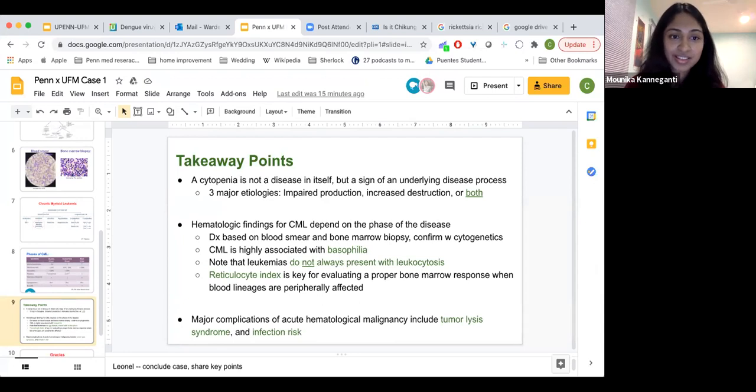In addition, hemolytic findings for CML depend on the phase of the disease. We definitely learn a lot from the blood smear and the bone marrow biopsy and can confirm later with cytogenetics. CML is associated with basophilia and the reticulocyte is key for evaluating a proper bone marrow response. Last thing just to mention, like in this case, those who are receiving chemotherapy are high infection risk. Blood cancers in particular are also higher risk for tumor lysis syndrome. In this case, the phosphate was normal. So don't think that this patient experienced tumor lysis syndrome, but something to also look out for. With that, we have maybe one or two minutes for questions. If anyone wants to unmute themselves, would be happy to try to answer.